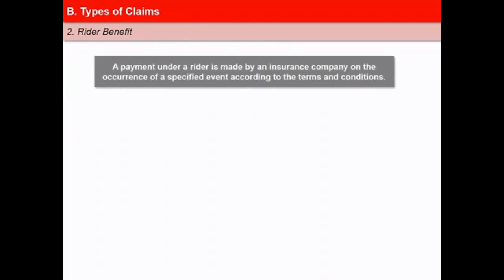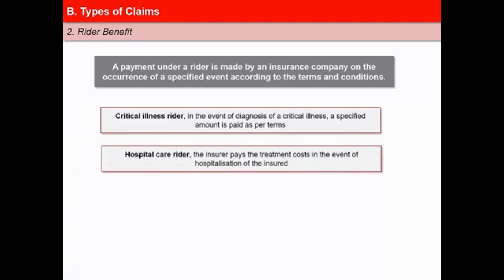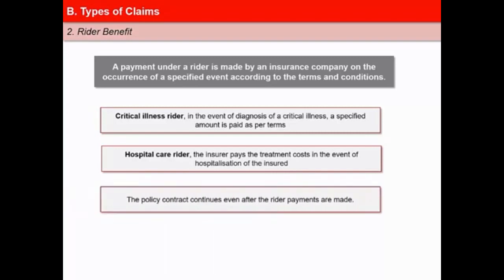Rider benefit is the payment under a rider which is made by an insurance company on the occurrence of a specified event according to the terms and conditions. Under critical illness rider, in the event of diagnosis of a critical illness, a specified amount is paid as per the terms; the illness should have been covered in the list of critical illnesses specified by the insurance company. Under hospital care rider, the insurer pays the treatment costs in the event of hospitalisation of the insured subject to terms and conditions. The policy contract continues even after the rider payments are made.